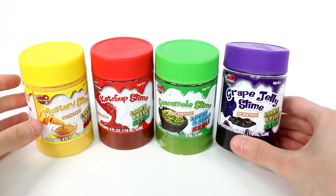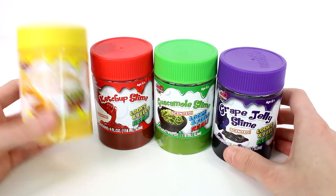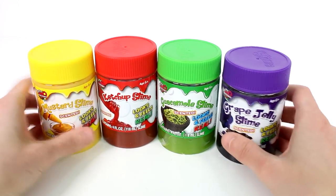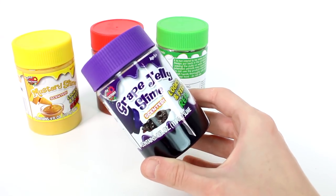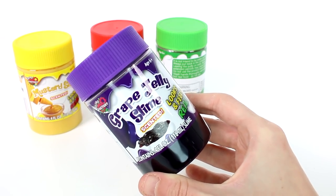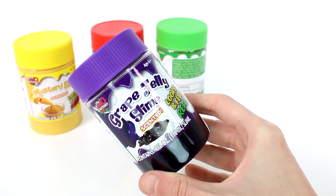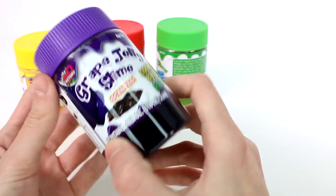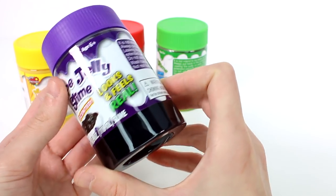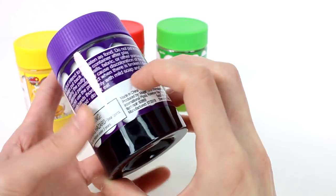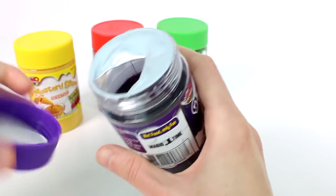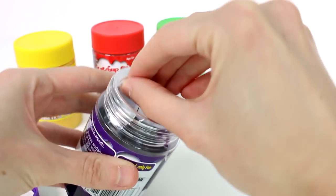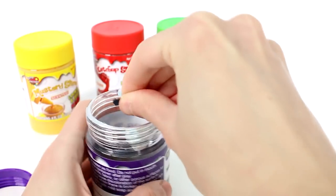I'm pretty stoked to get these open, so let's get started. We're going to look at the grape jelly. Remember guys, this is not actually food. This is just slime that happens to look like food, or it's themed after food. Grape jelly slime, scented, looks and feels real. There's a do not eat warning right there.